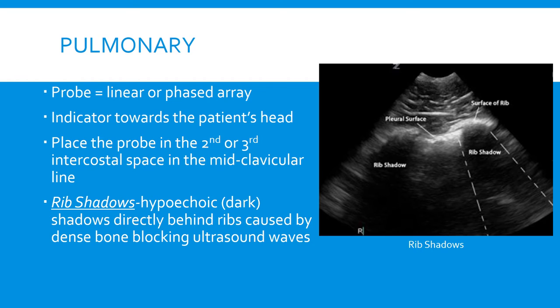For pulmonary we can either use the linear probe or the phased array probe. We're going to be pointing the indicator towards the patient's head and we're going to place the probe in the second or third intercostal space around the midclavicular line.